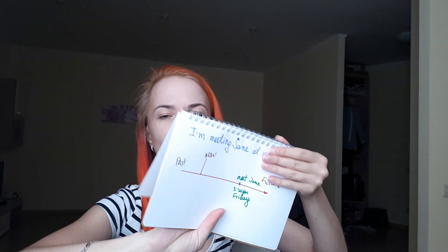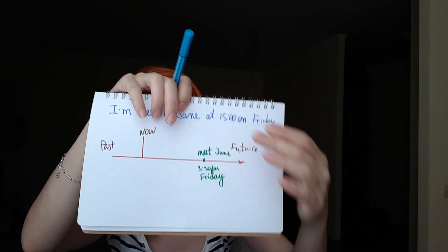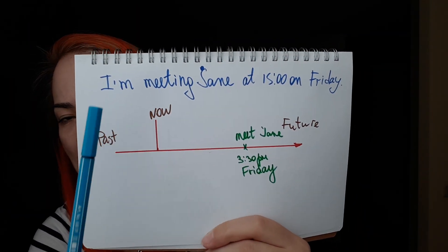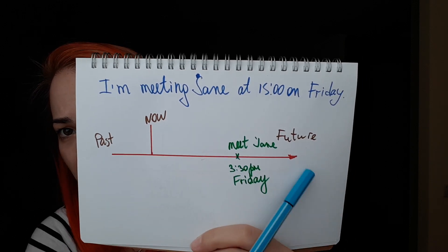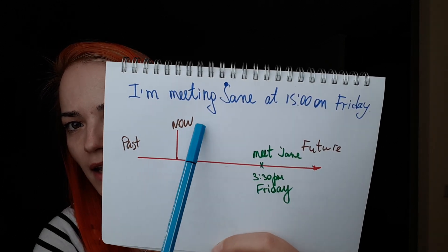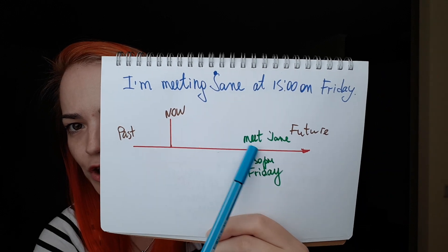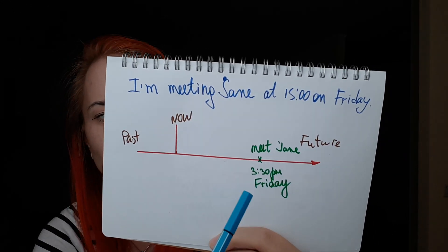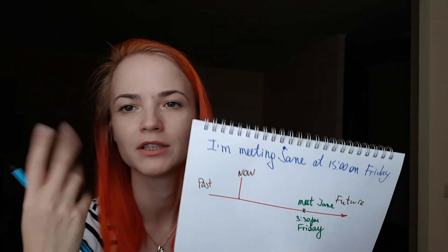The next use is present continuous for future events. The example is: 'I'm meeting Jane at 3 p.m. on Friday.' Again, you have a timeline — past, now, and future — and in the future you mark: me, Jane, 3 p.m., Friday. Your CCQs may be: 'Are we talking about the present or future?' — Future. 'Is it happening now?' — No. 'Does it happen always?' — No.